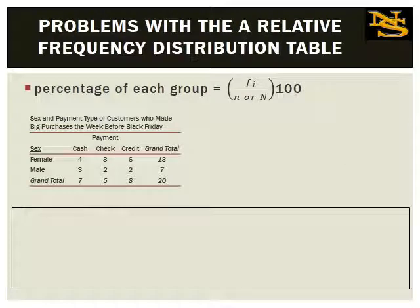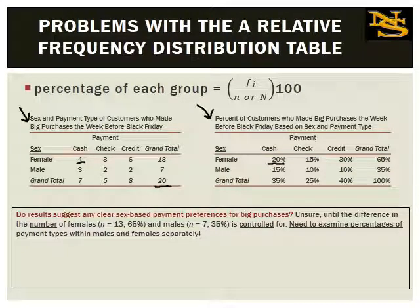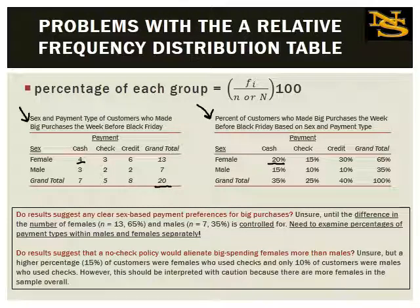To recap: we started with the joint frequency distribution table, then converted to a joint relative frequency distribution table — so 4 out of 20, or 20% of all customers, were females who paid with cash. But let's get back to the original question: we want to see if there are sex-based payment preferences. We're unsure because we haven't controlled for the fact that we have almost twice as many females as males. We don't yet know if results suggest that a no-check policy would alienate big-spending females — but we can see that a higher percentage of female check users exists among all customers, without controlling for group sizes.